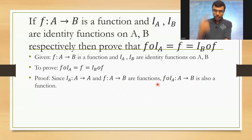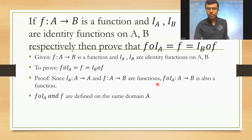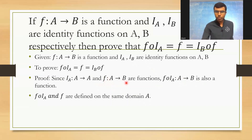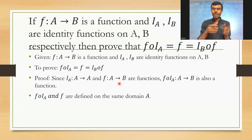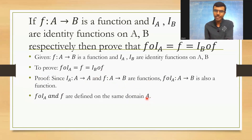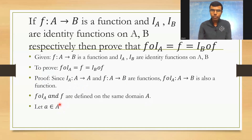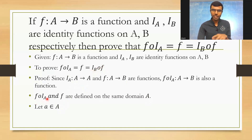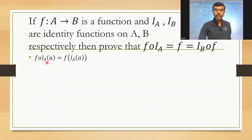f∘iₐ maps A to B, so it is a function. Now, f∘iₐ is defined from A to B and f maps A to B — both have the same domain, capital A. Now I'll consider an element 'a' belonging to A and give it as input to the more complicated function f∘iₐ first.